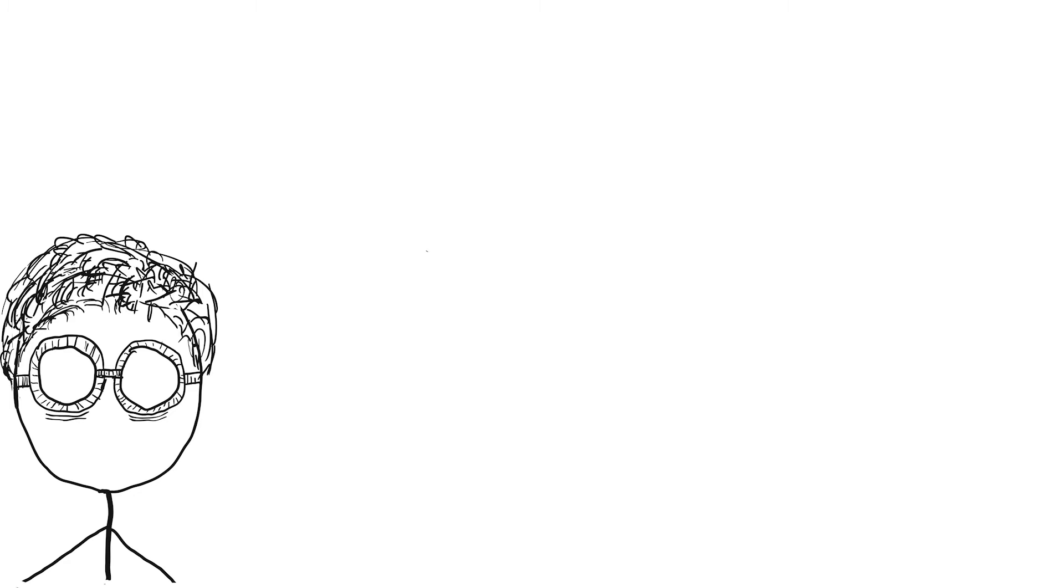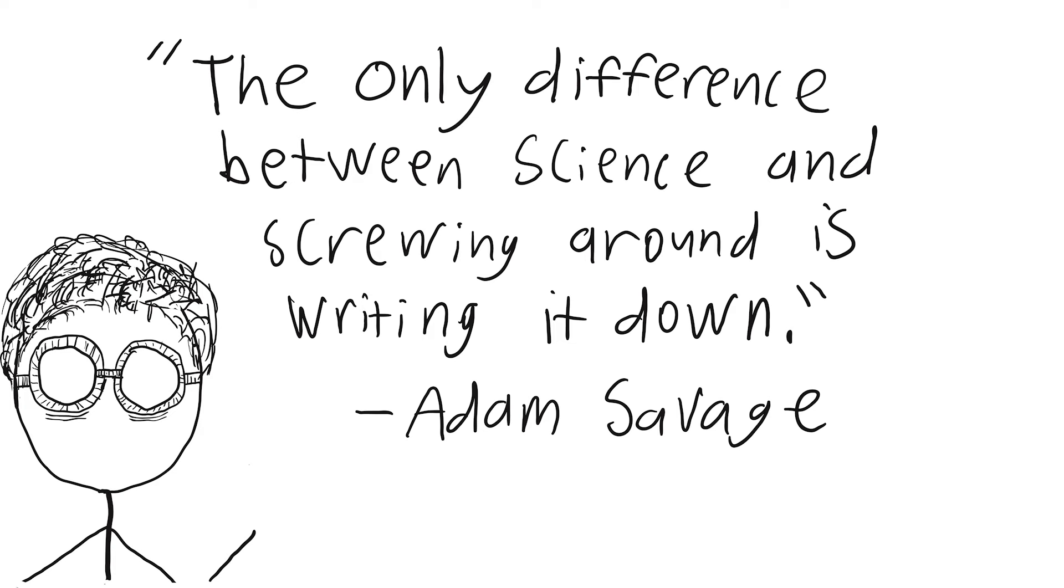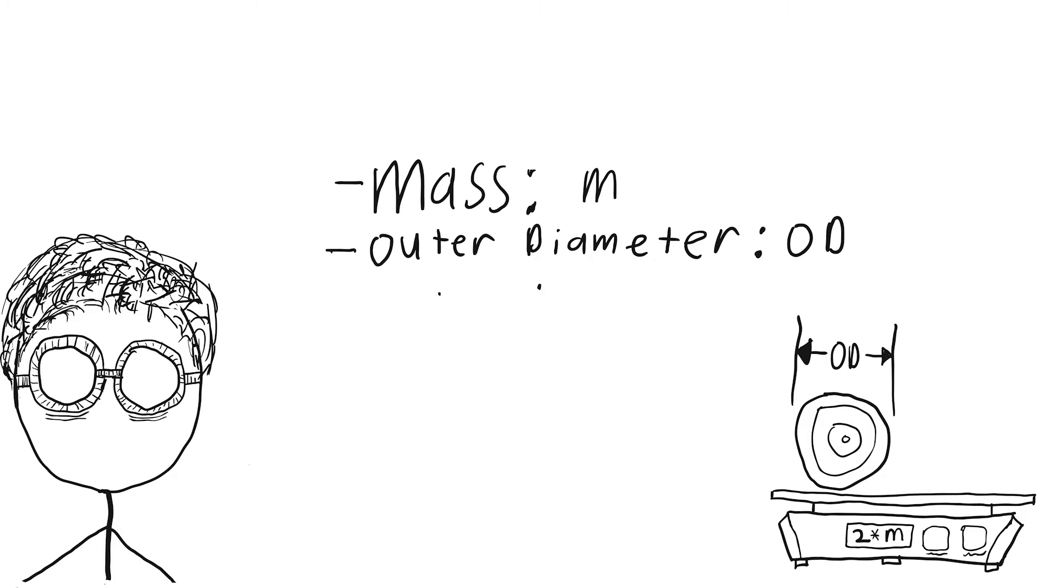First off, you need to define your goal. Document exactly what kind of yoyo you're trying to design and what traits you want it to have. You're going to need to specify the mass, the outer diameter, and the width.